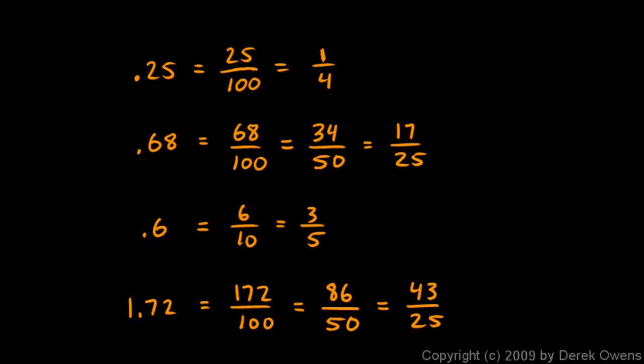So just some examples of converting decimals to rational numbers. What gets a little bit different is when we start converting repeating decimals to rational numbers, and we'll look at that next.